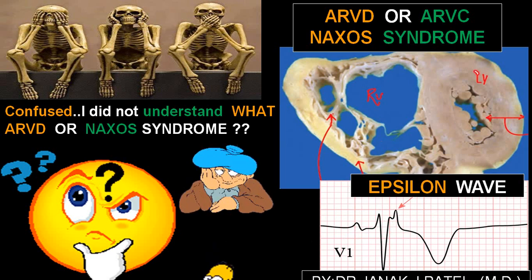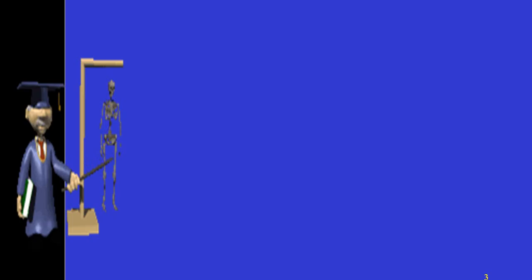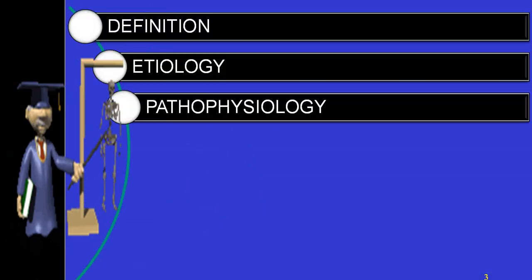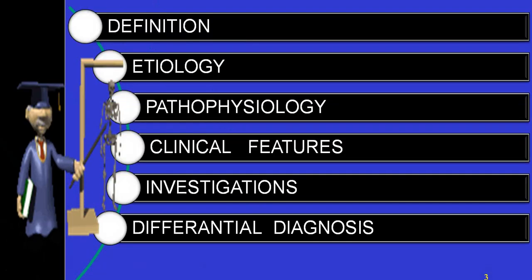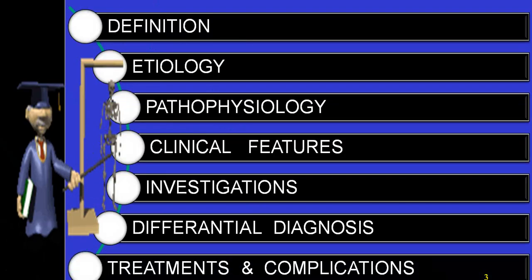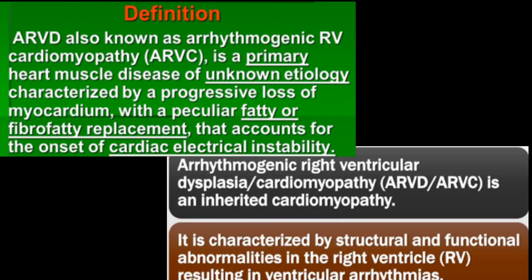The epsilon wave is very commonly seen in V1, and that is how you suspect ARVD with a strong family history. We will be talking under the headings of definition, etiology, pathophysiology, clinical features, investigations, differential diagnosis, treatment, and complications.